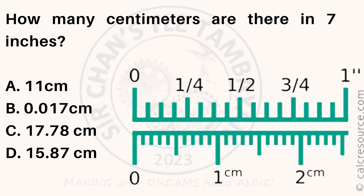How many centimeters are there in 7 inches? A. 11 centimeters. B. 0.017 centimeters. C. 17.78 centimeters. D. 15.87 centimeters.